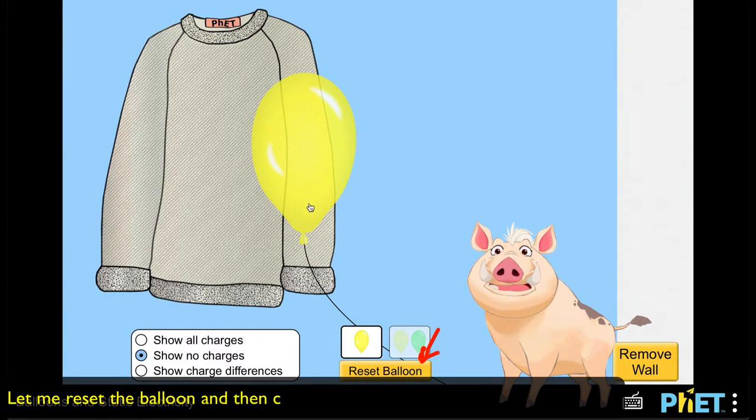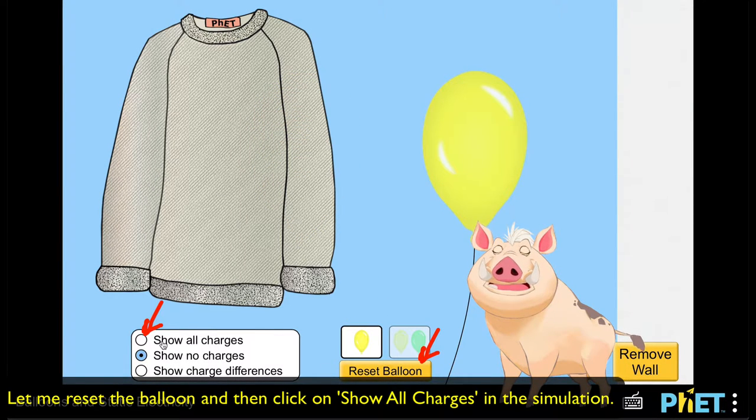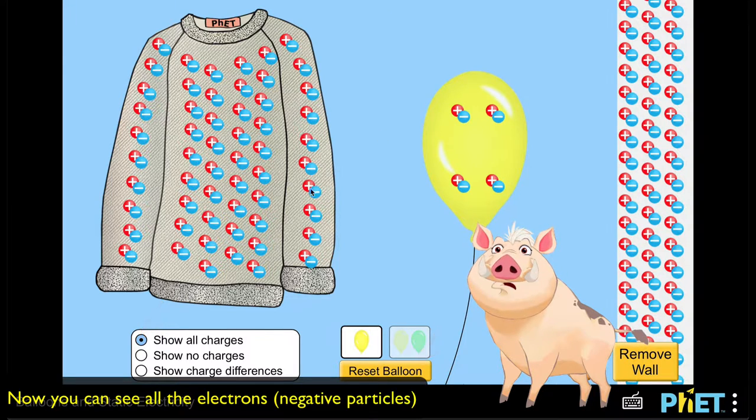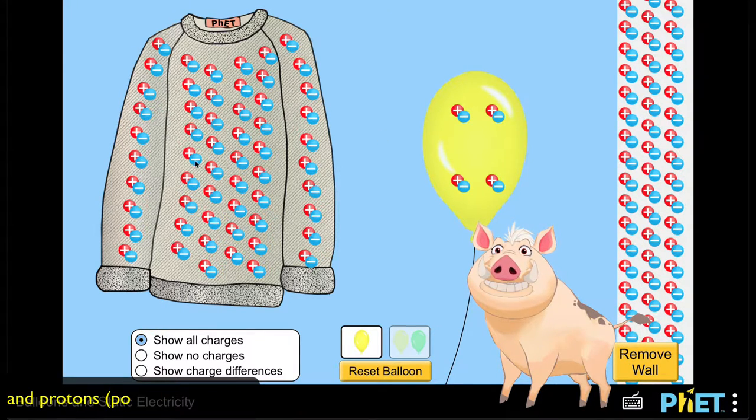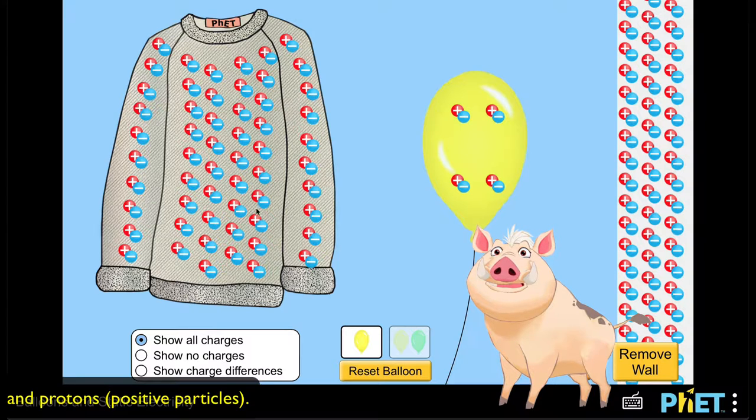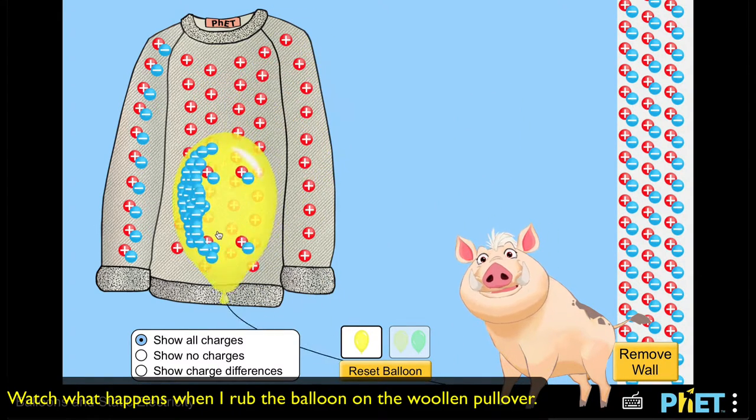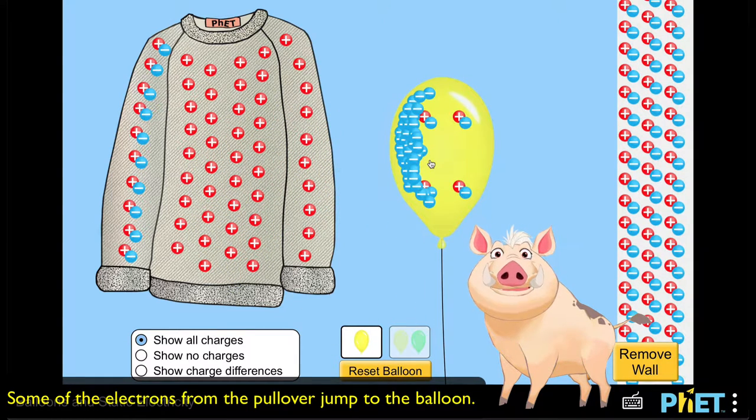Let me reset the balloon and then click on 'show all charges' in the simulation. Now you can see all the electrons—negative particles—and protons—positive particles. Watch what happens when I rub the balloon on the woolen pullover. Some of the electrons from the pullover jump to the balloon.